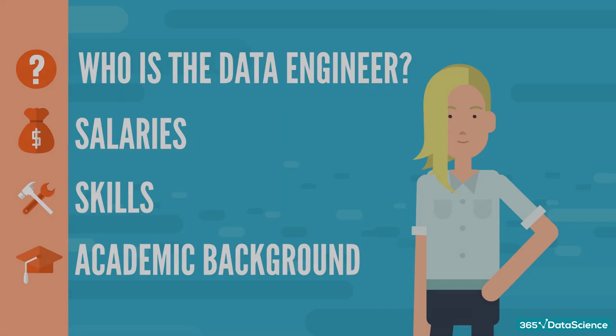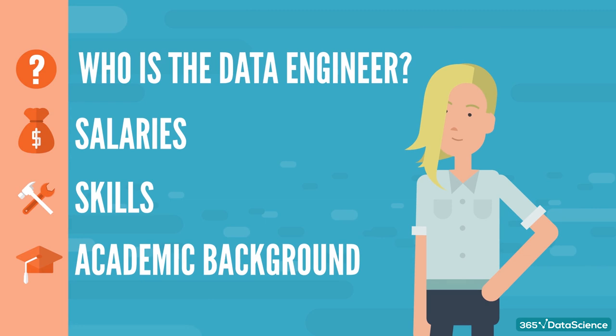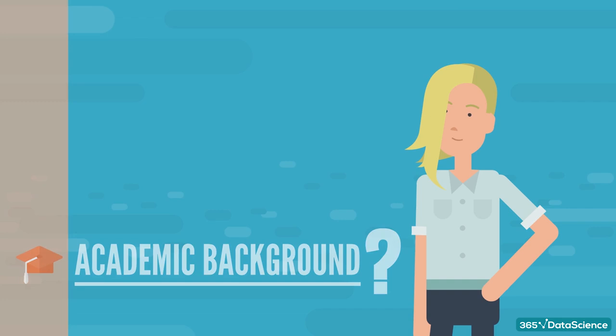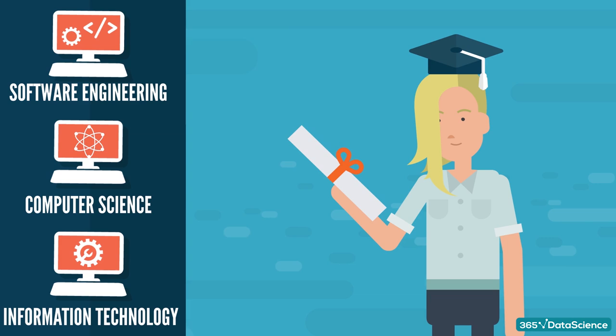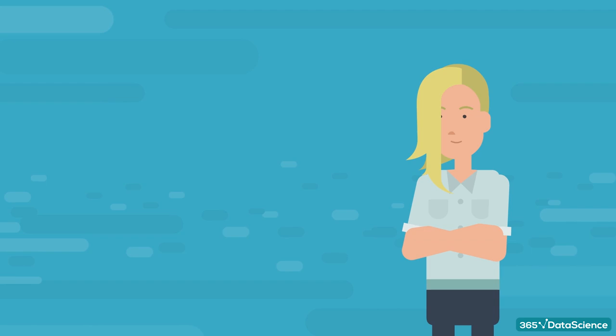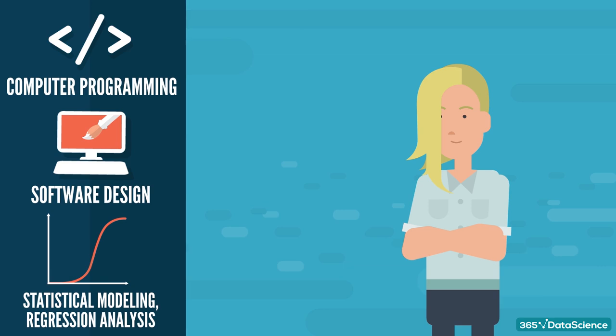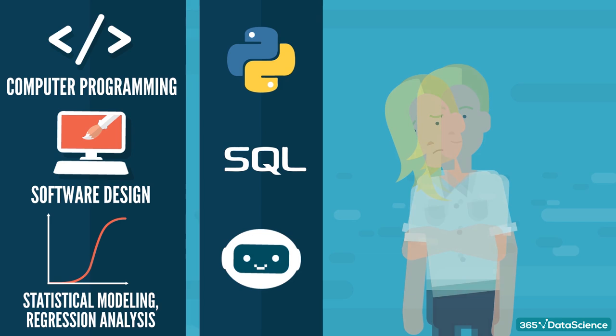Let's consider education first. What academic background do you need to become a data engineer? Obviously, a degree in software engineering, computer science, or information technology will give you a flying start. However, if that's not the case, you can still make the cut. But you still need skills in computer programming and software design, statistical modeling and regression analysis, Python, SQL, and machine learning. Now, before you rush into writing off your dream job, you should know that acquiring these skills is absolutely possible, even for complete beginners.